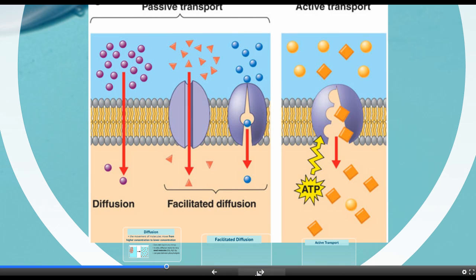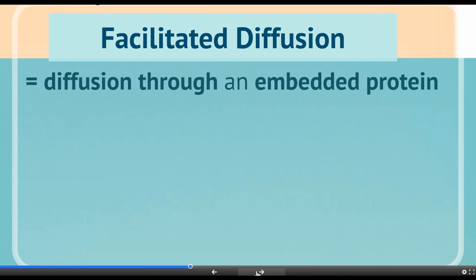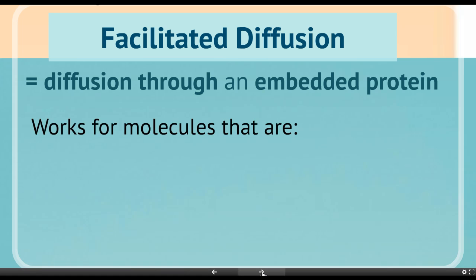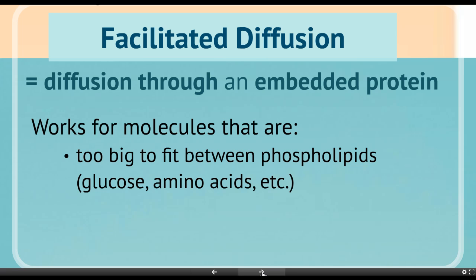Another form of passive transport — passive meaning we don't need any energy — is facilitated diffusion. Facilitated diffusion is diffusion through an embedded protein; it's diffusion where you just need a little bit of help. We need to use this for molecules that are too big to fit between the phospholipids, so we actually need to create a doorway or a channel.